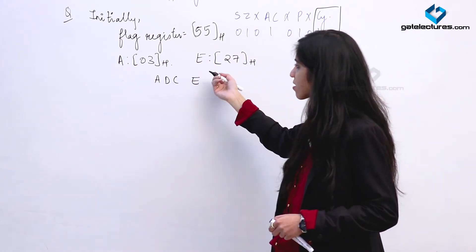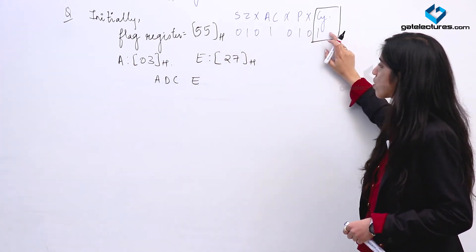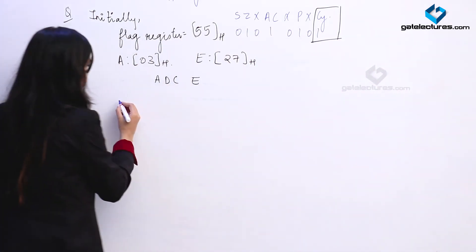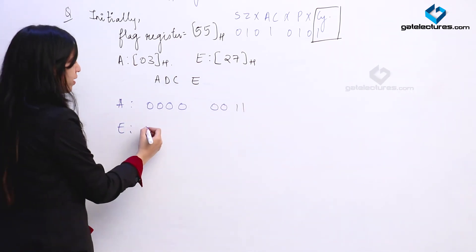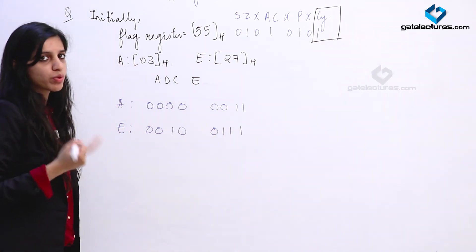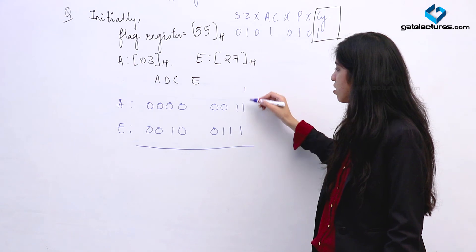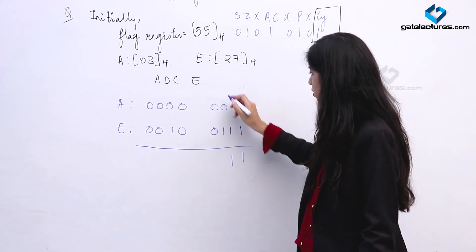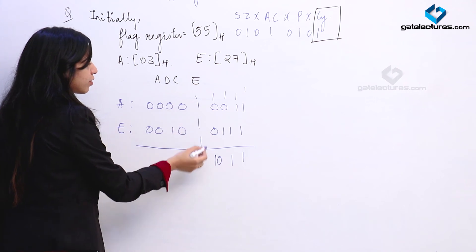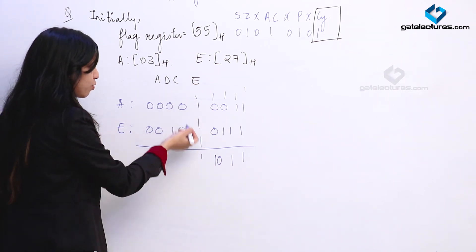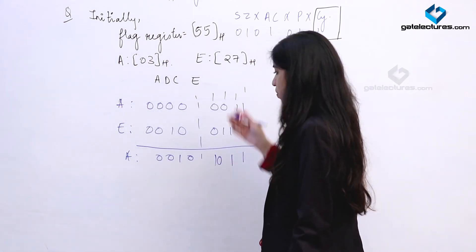So we are going to add the contents of A (03H) with the contents of E (27H) along with the carry, which is initially 1. Performing the addition, the result comes to 0010 1011. There is no auxiliary carry — we are not getting any carry from the lower 4 bits to the upper 4 bits, so the Auxiliary Carry flag is 0. The final contents of register A are 0010 1011.